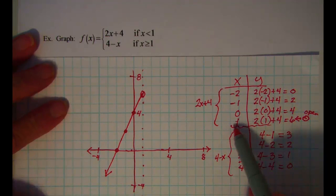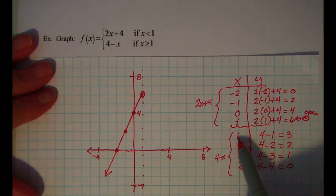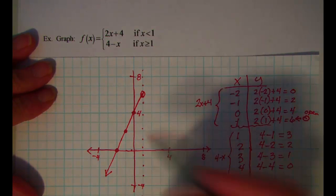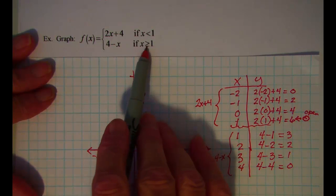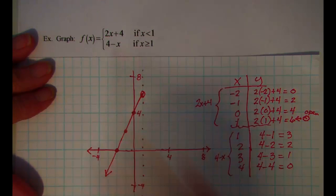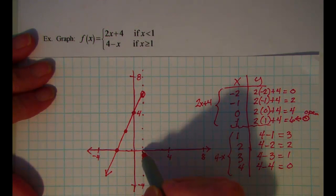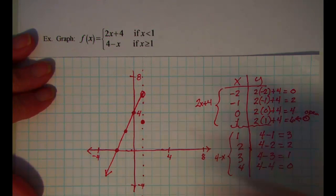Alright, let's go ahead and graph to the right of x equals 1. When x is 1, y is 3. Now on this one for the bottom rule, I am allowed to use that point. When x is 1, y is 3, so I'll have a solid dot at that point.